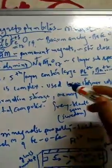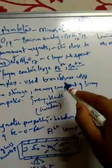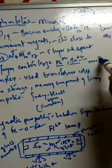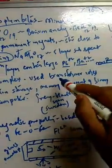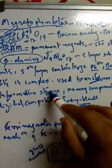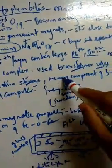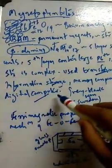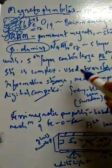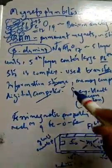Where they can be used? These magnetoplumbites are used because of that magnetic property, very magnetic nature. They are used in transformer cores, information storage device, and memory component of binary and digital computers. Mainly in the electronic industry, this magnetoplumbite is used.